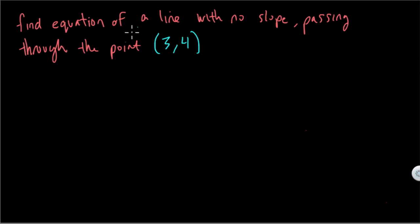Okay, so here they ask us to find the equation of a line with no slope passing through the point (3,4). I want to talk about this intuitively and show you some other types of examples that are related here.